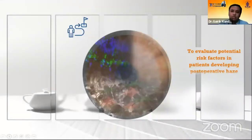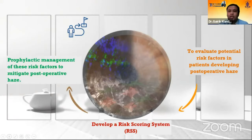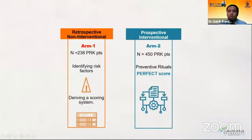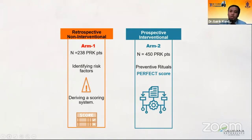And that's what we wanted to dwell on. There are multiple risk factors, and we wanted to develop a risk scoring system utilizing our database for PRK patients, and whether that could help us in improving our outcomes. So we did a study which looked at both a retrospective analysis of PRK patients — 238 of them operated between 2013 and 2016 — and a prospective arm which looked at rituals or ways to actually decrease the incidence of post-PRK HAZE.